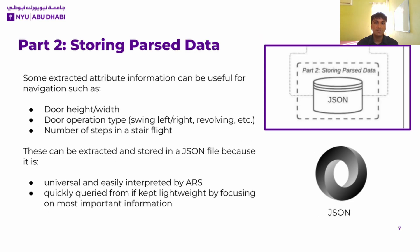Next is the storage of parsed data, and for that we focus on attributes that are useful for navigation. Examples of this include door heights and widths, door operation types such as swing left, swing right, or revolving, and the number of steps in a stair flight. For the scope of this paper, we consider door operation types, which would be really useful information for autonomously interacting with a door to open or close it as the ARS navigates between spaces. This information is parsed and stored in a JSON file. JSON files are pretty universal, easily interpreted by ARS, and have a key-value pair structure which allows them to be quickly queried. Only the most important navigation information from the IFC should be kept in the JSON so as to keep it lightweight, allowing information queries to happen quickly, which is important for real-time applications.